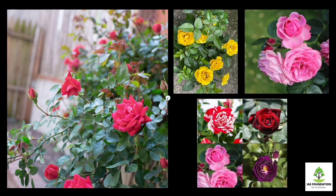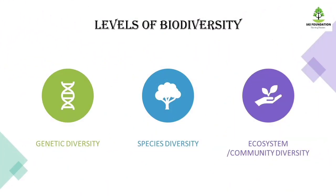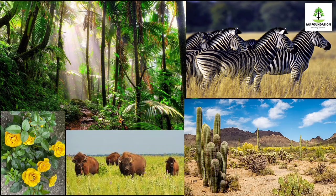Species diversity is the next type. Species are different from one another — it is not about interbreeding within the same species, but different species altogether. For example, there are animals of different kinds. All species are different from each other. So this is our species diversity.